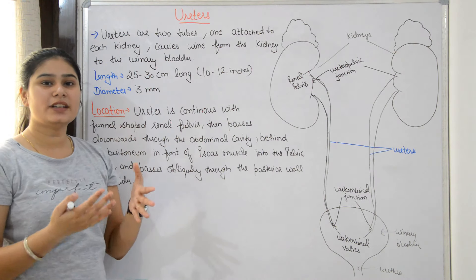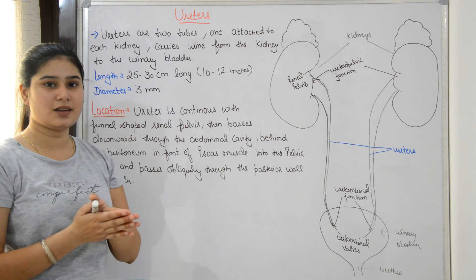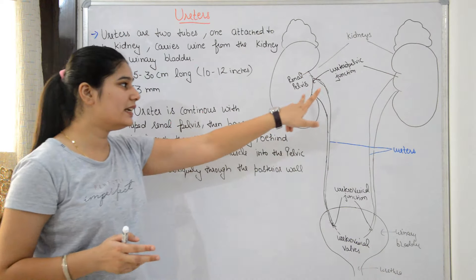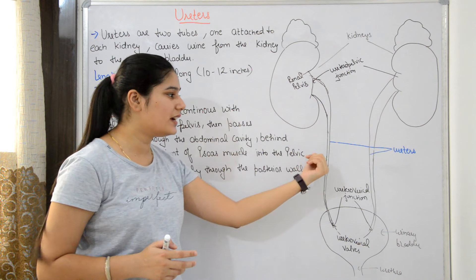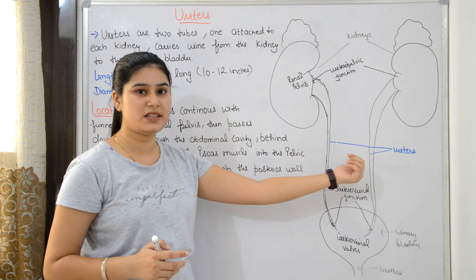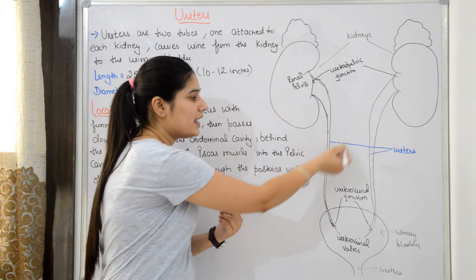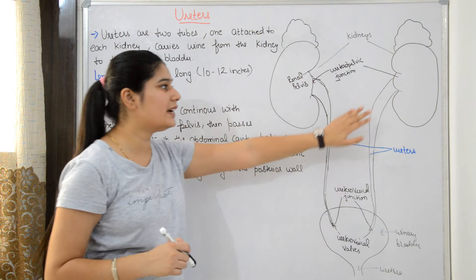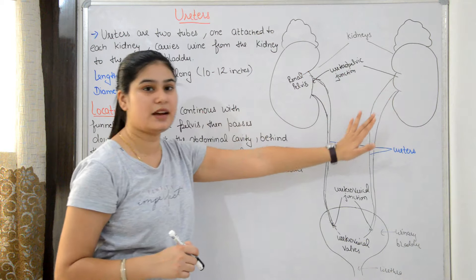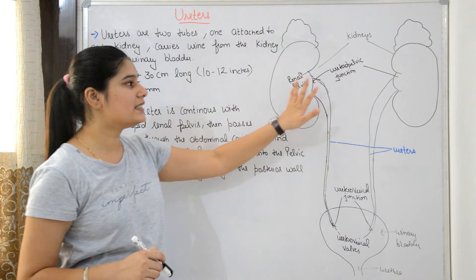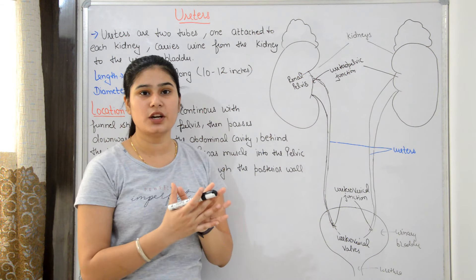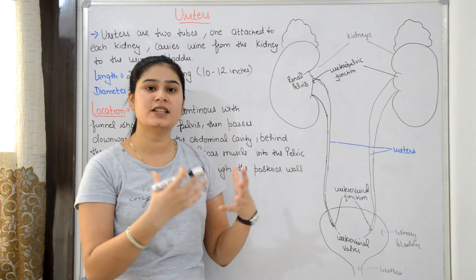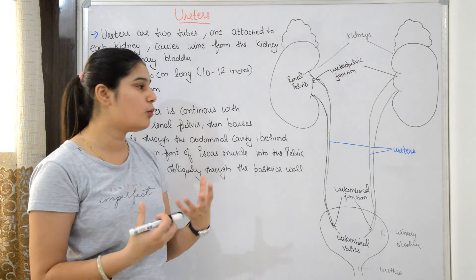Ureters are part of the urinary system. The urinary system contains a pair of kidneys, and the ureter is also in a pair — one for each kidney. Right kidney has the right ureter and left kidney has the left ureter. The function of the kidneys is to produce urine by filtering the blood, and any waste product is excreted in the form of urine.